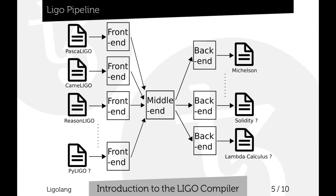We currently have one backend — the Michelson backend — but we're discussing other backends: one compiling to Solidity for Ethereum, maybe a Lambda Calculus backend for all-purpose programming, maybe a JS backend to interpret contracts directly in the web browser. The benefit is that a programmer writes the program once and can deploy it on any available blockchain we have a backend for, or interpret it in their preferred environment.